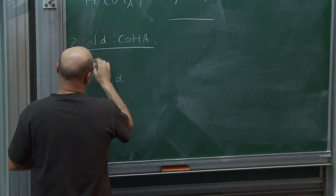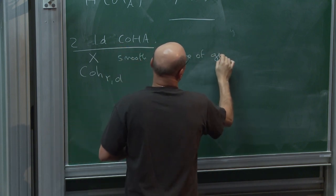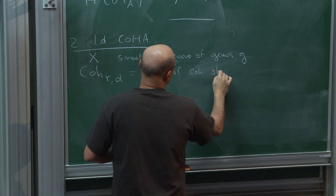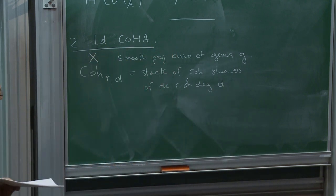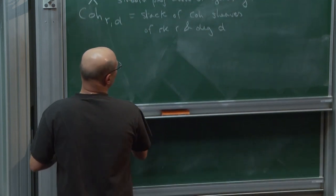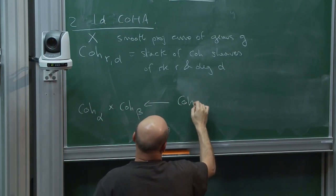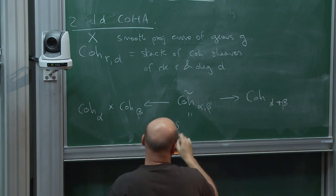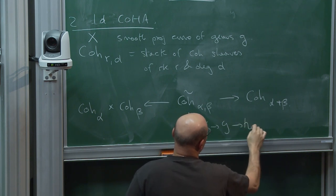Let me denote by Coh_{R,D} the stack of coherent sheaves of rank R and degree D on X — a smooth projective curve of genus G. This contains as an open substack the stack of bundles. The induction diagram: I take Coh_α × Coh_β, and there is a stack C̃_{α,β} of all short exact sequences F_β → G → H_α.